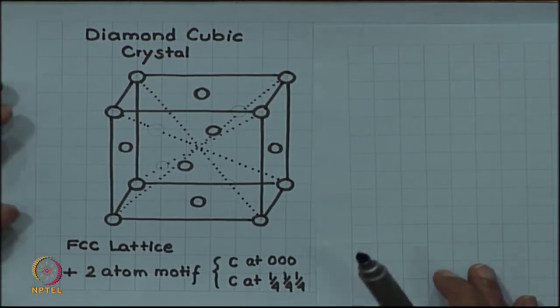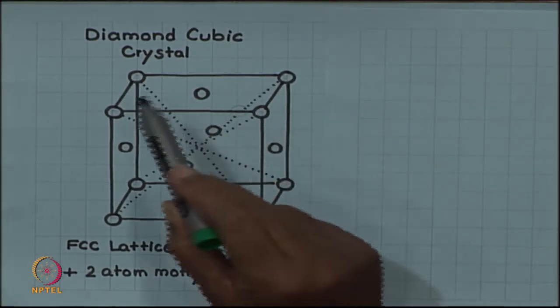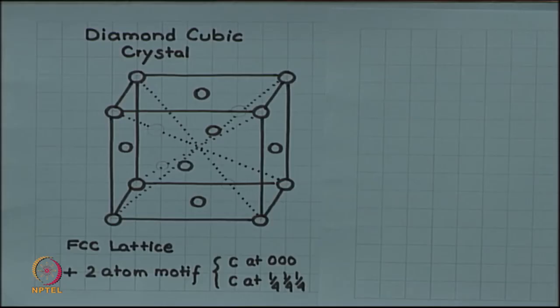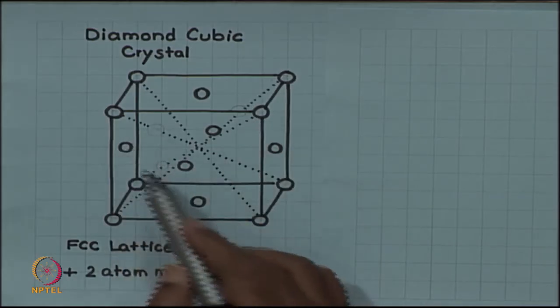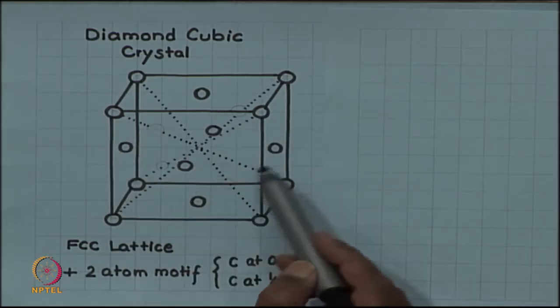What kind of structure is this? This structure can be related to the diamond cubic structure which we have studied before. The diamond cubic structure has an FCC lattice but has a 2-atom motif. The carbon atoms are at the FCC lattice points at the corners and face centers.